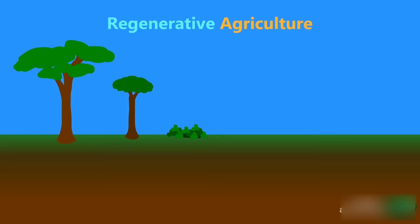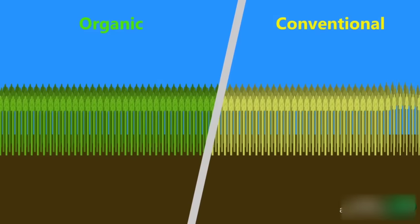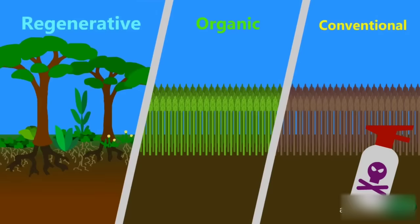Regenerative agriculture is a set of farming practices that increase biodiversity and soil organic matter. Currently, most agricultural practices are devastating to biodiversity. Even organic agriculture, while not as bad, still does more harm than good. Regenerative agriculture is a way to reverse this trend to actually make a positive impact on the land.